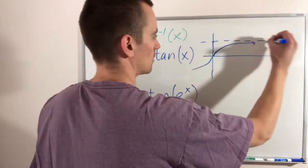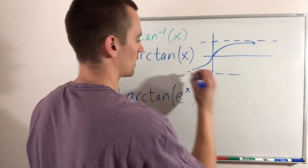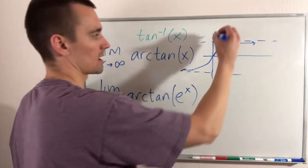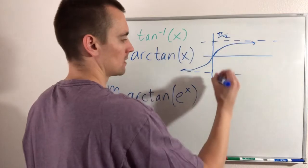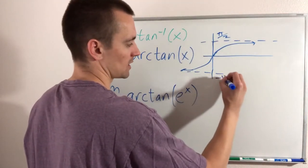So what that would look like is more like this. We're going to have a horizontal asymptote at pi over 2 and a horizontal asymptote at negative pi over 2.